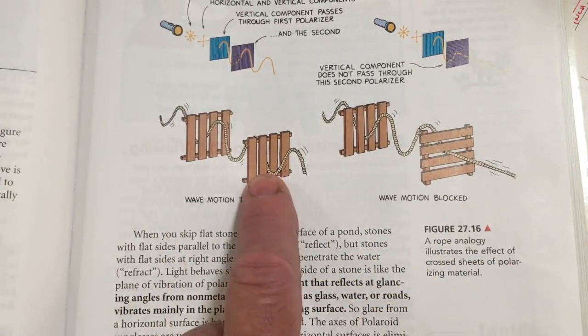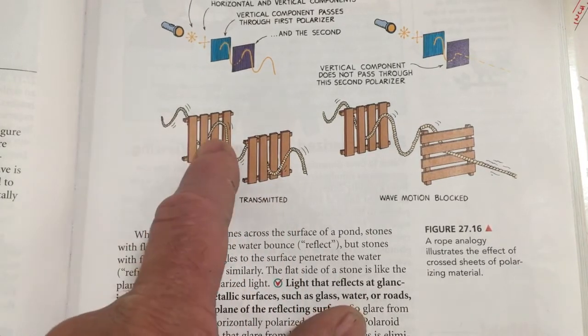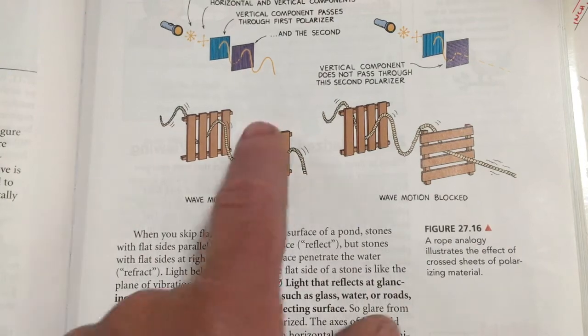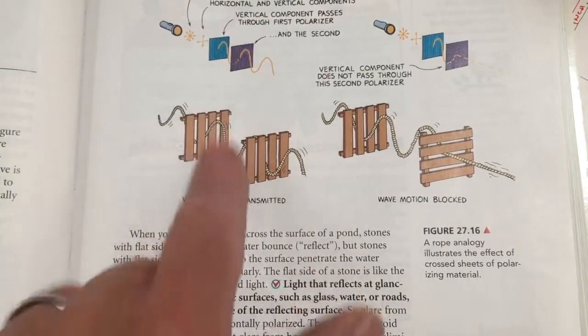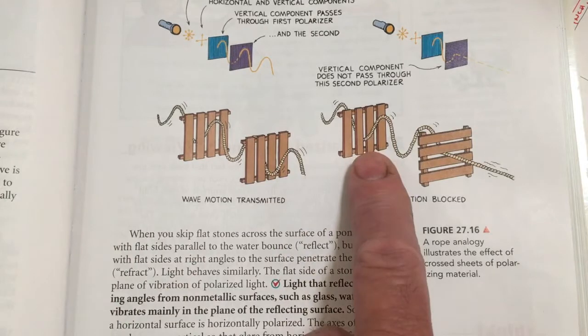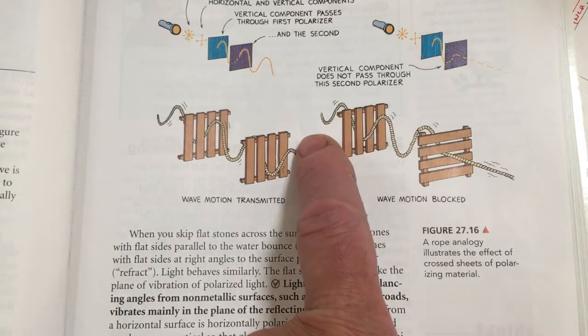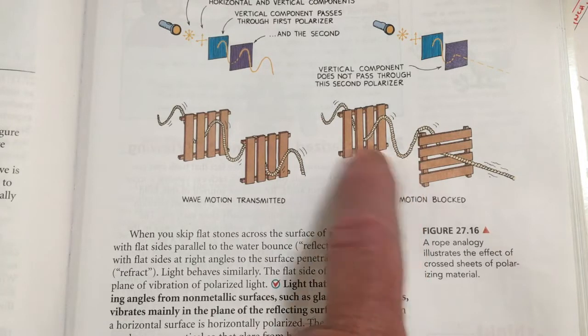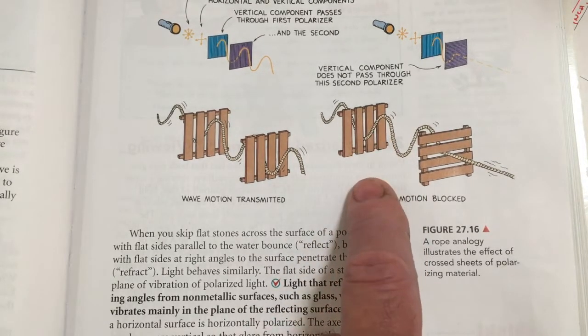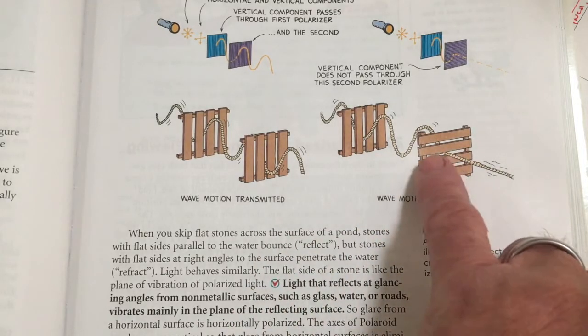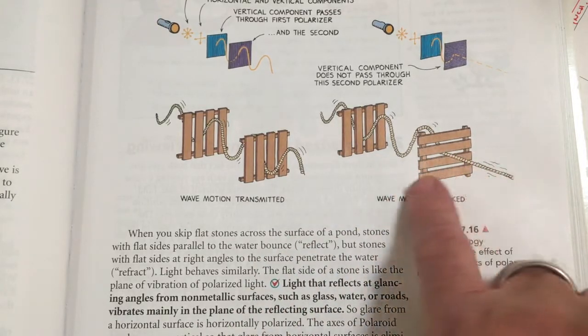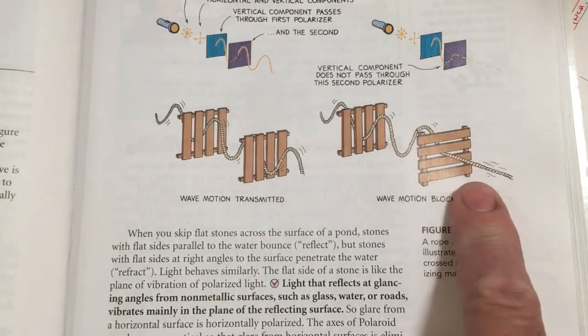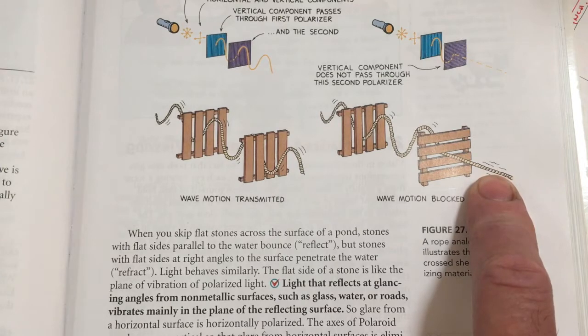Now, if you had two such fences back to back, any light that gets through the first fence can still get through the second fence because the orientation of the slats is parallel. But over here in the second drawing, imagine vertically jiggling rope, the jiggles get through the first fence because its slats are oriented vertically. But then if that rope were to go through a horizontally oriented picket fence, the up and down vibrations would be blocked and what comes out is no vibration at all.